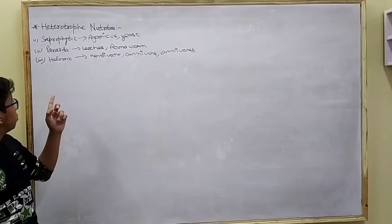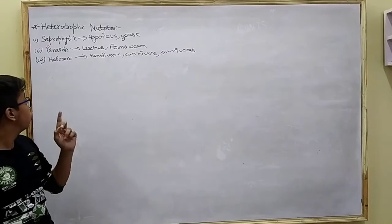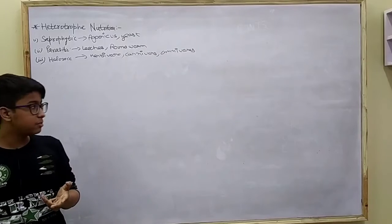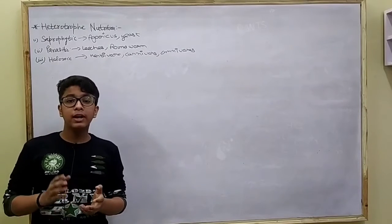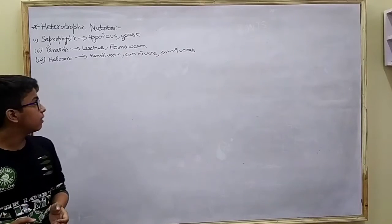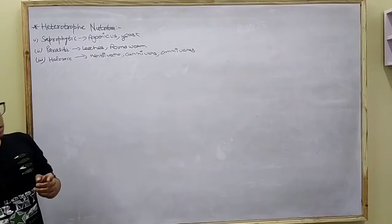First, saprophytic, second parasitic, and third holozoic. Saprophytic nutrition is nutrition where the organism obtains nutrients from dead and decaying matter. Examples are Agaricus and yeast.